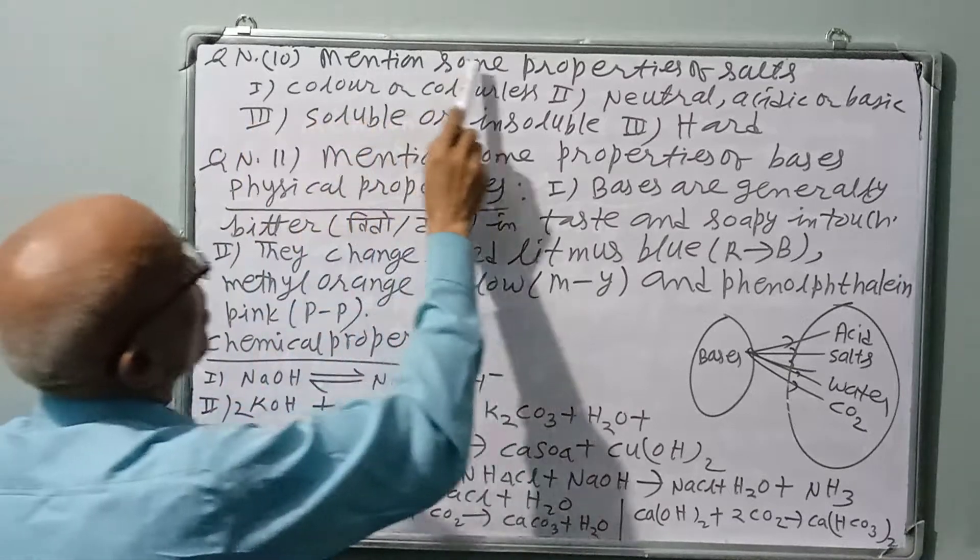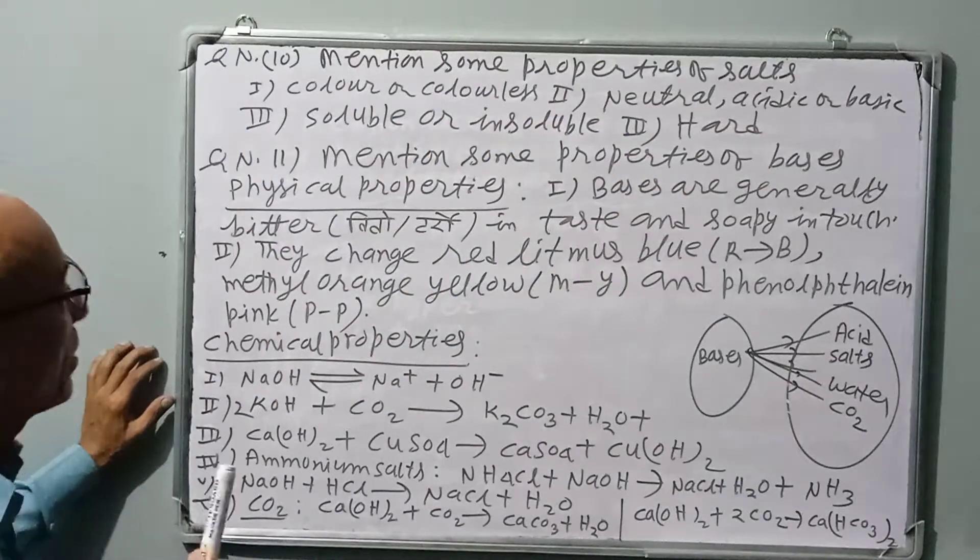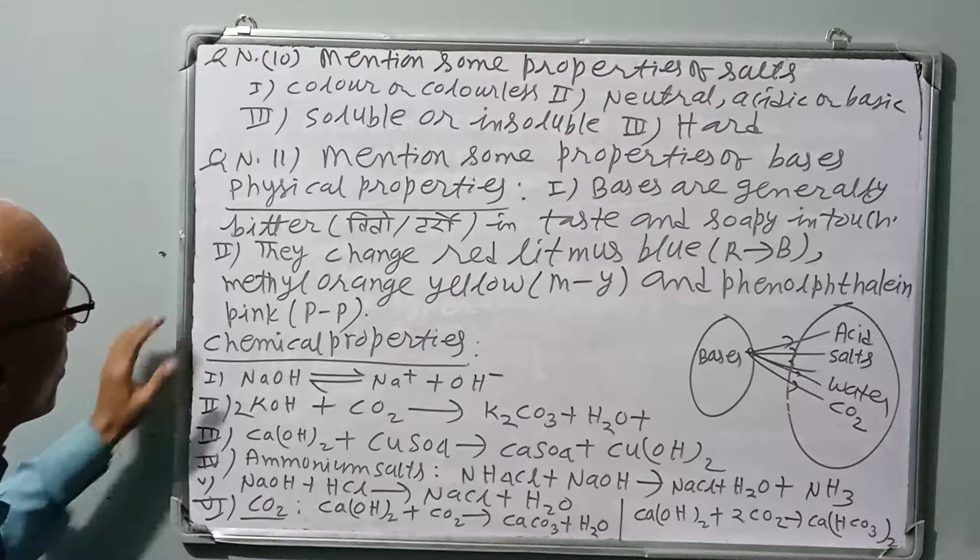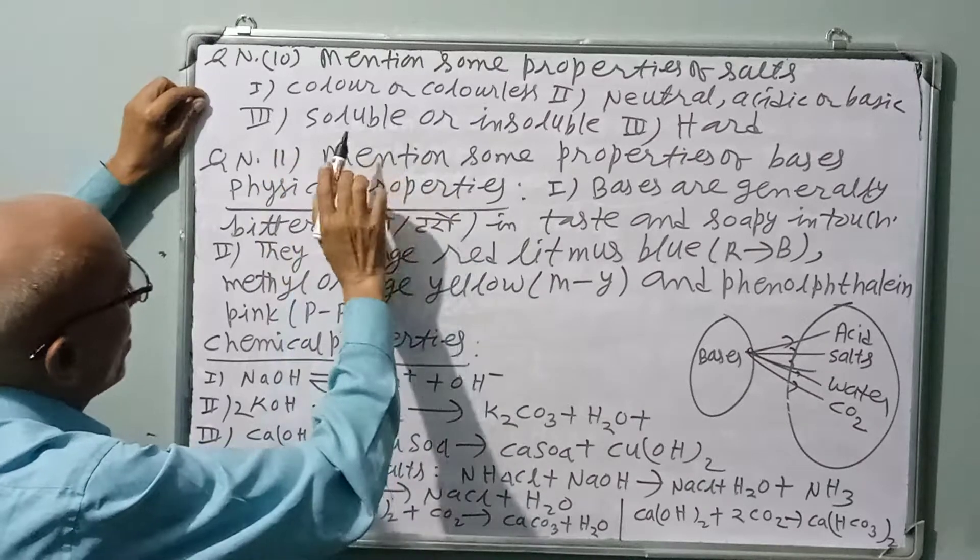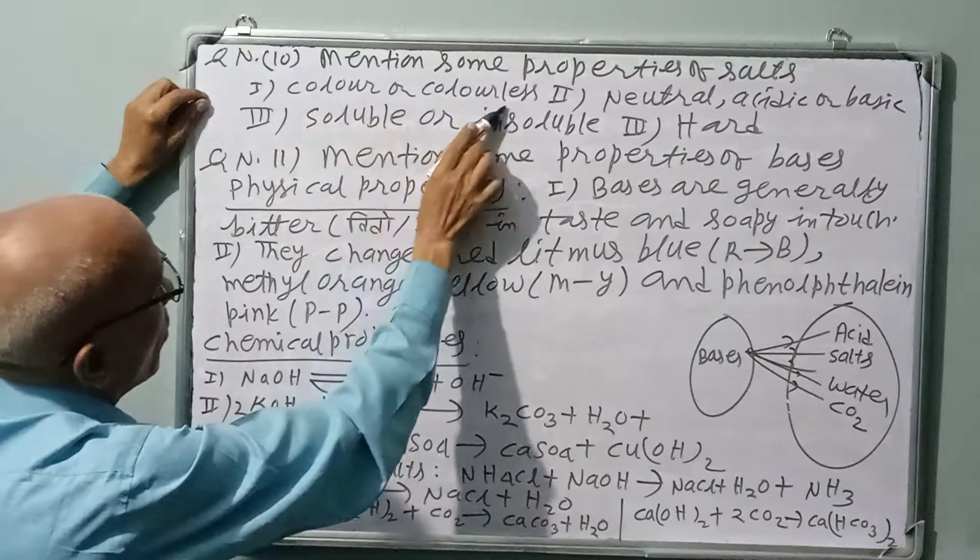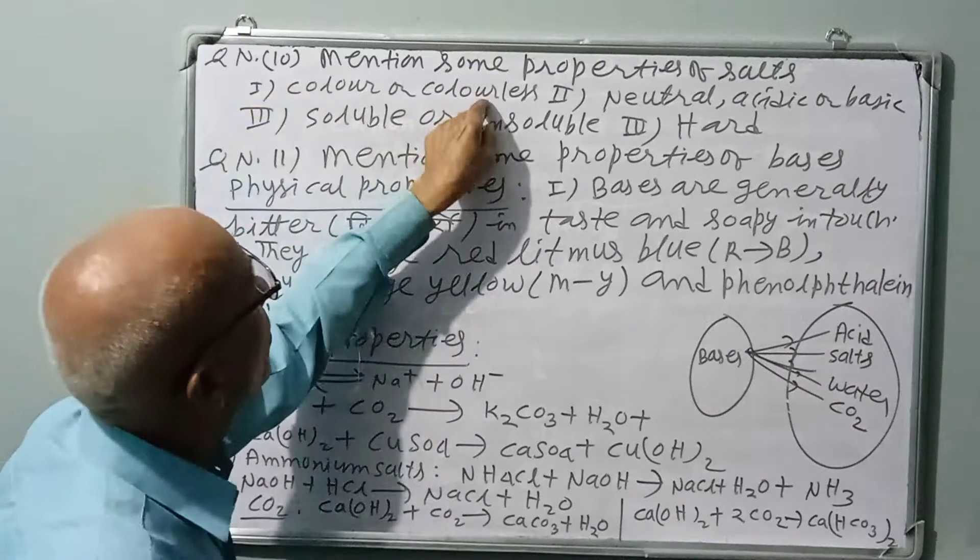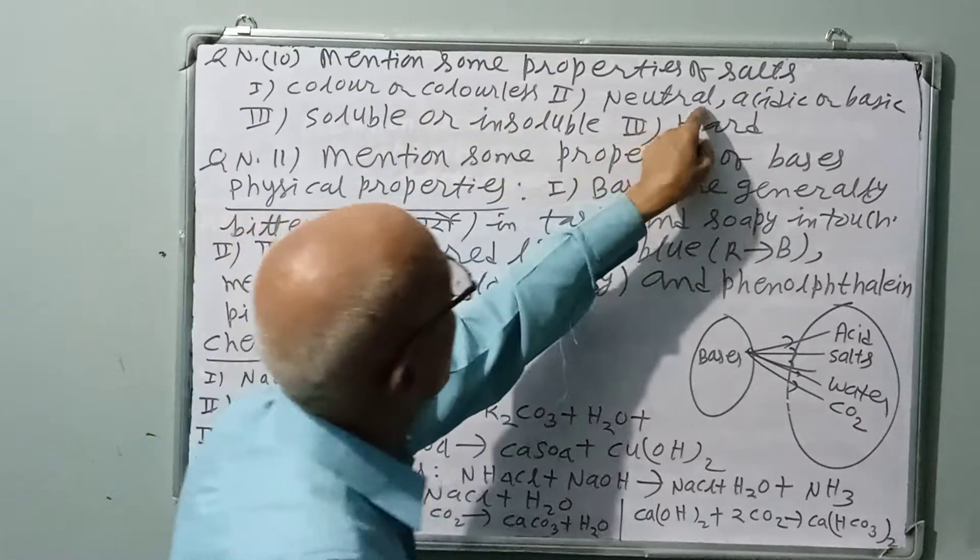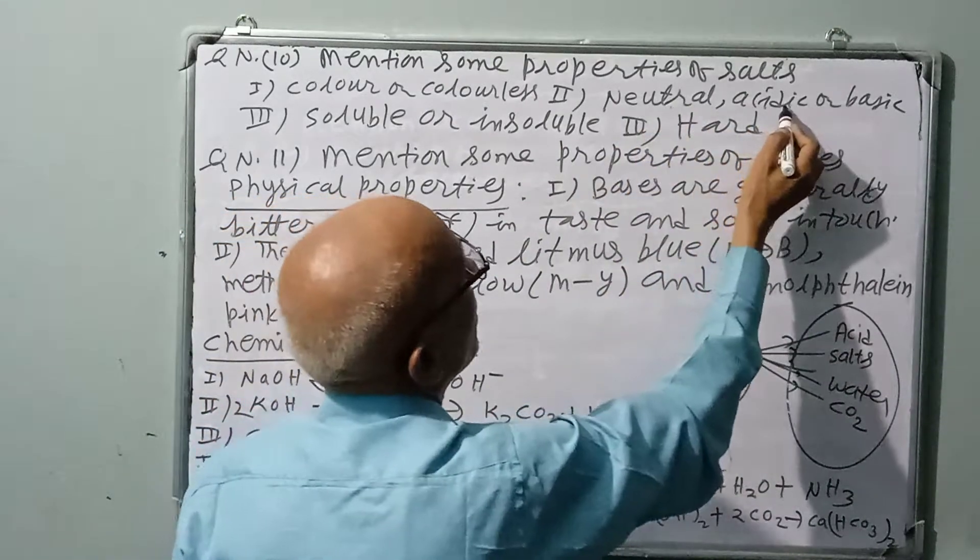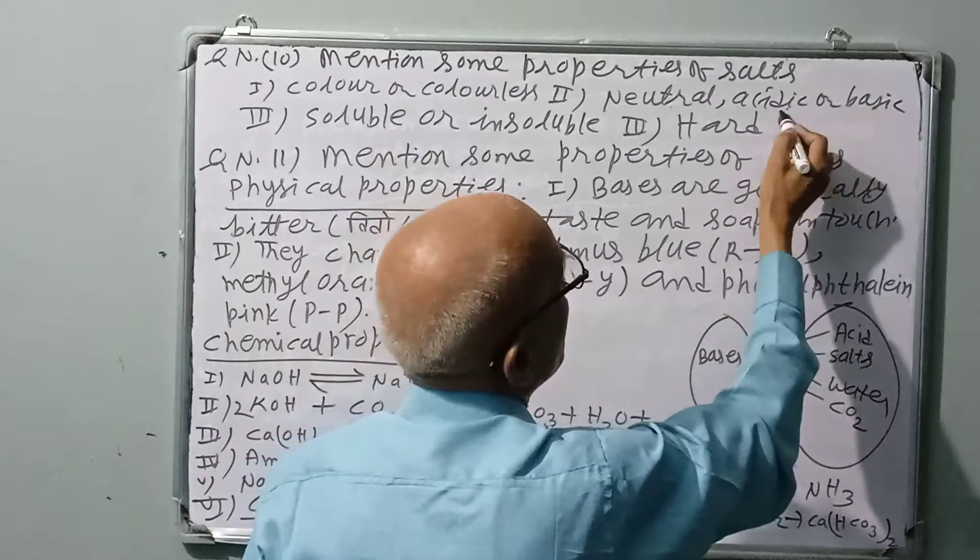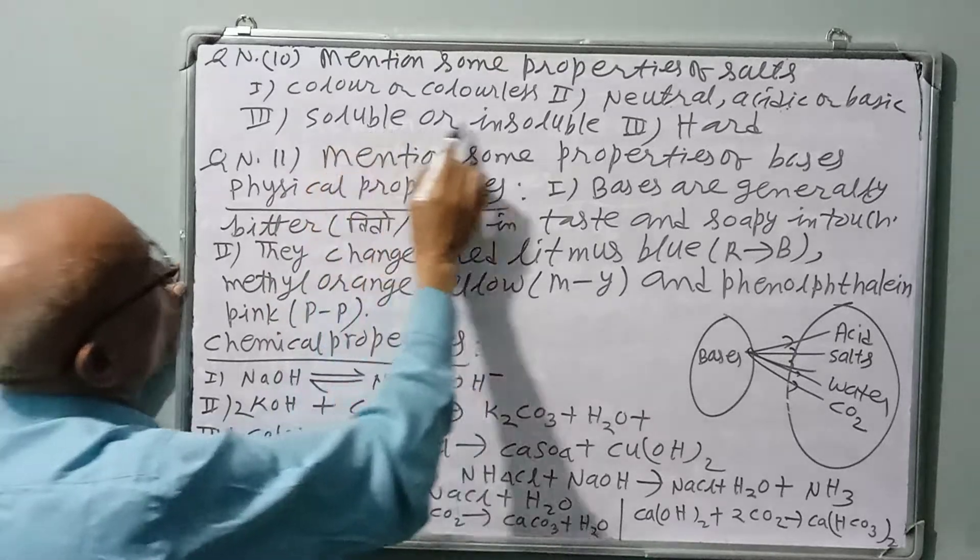Question number 10: Mention some properties of salts. Generally, salts are neutral and salty, but all salts are not salty. Some salts are colorful, some are colorless. Generally, salts are neutral, but some salts are acidic having acidic property, some salts are basic.